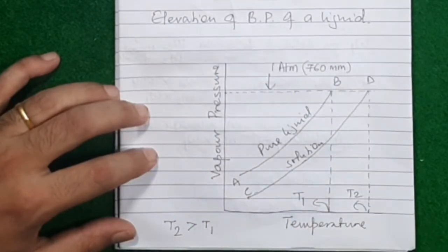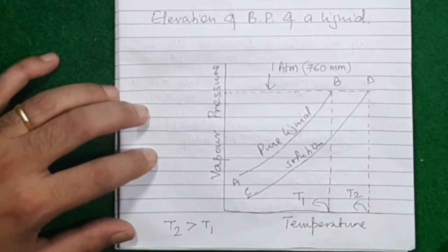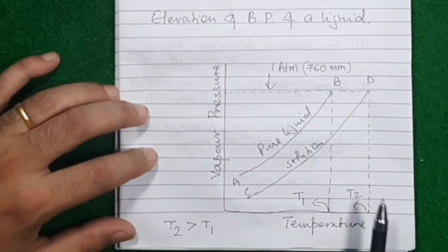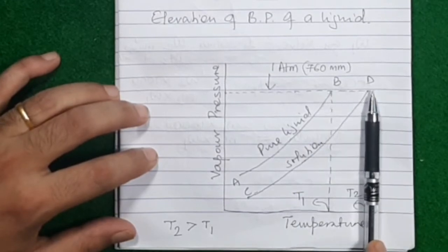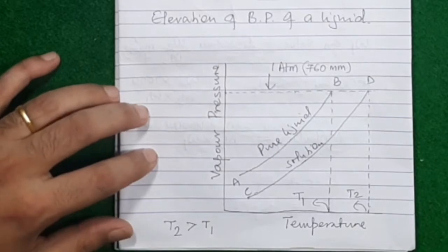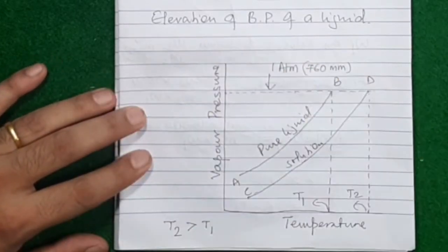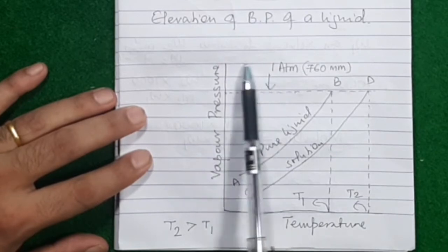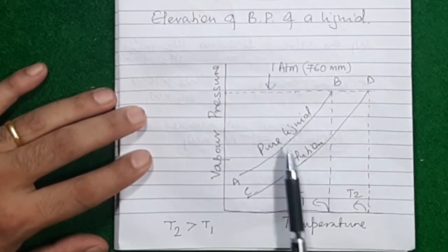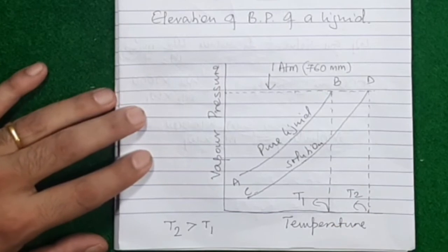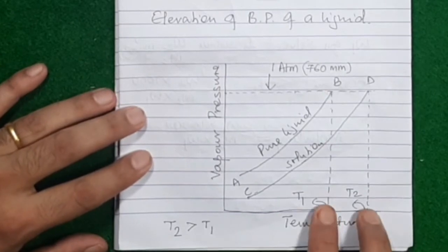Because we added impurity and prepared a solution, the boiling point of this liquid has gone up — it has risen. This phenomenon is called elevation of boiling point of a liquid. On adding impurity, its boiling point will rise, and that is known as elevation of boiling point.